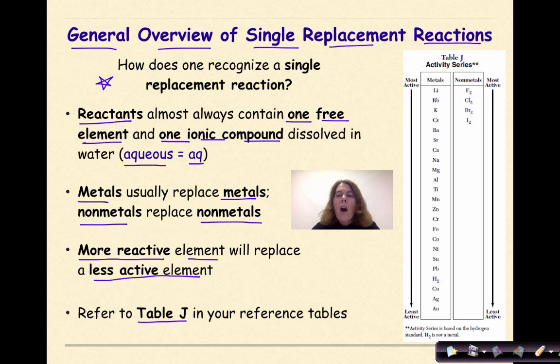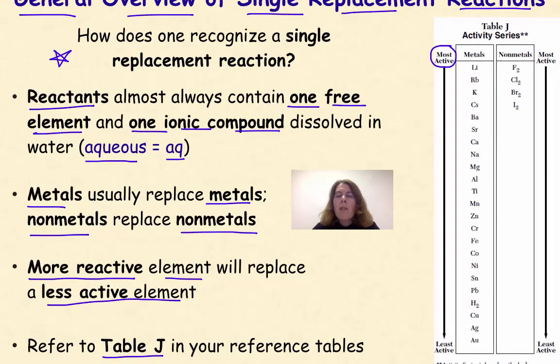So if we look at table J, our most active metals and nonmetals are at the very top of the table, and they make sense. If we look at the metals, we're looking at elements that come from group 1, a little bit of group 2 right here.